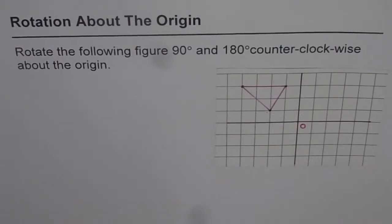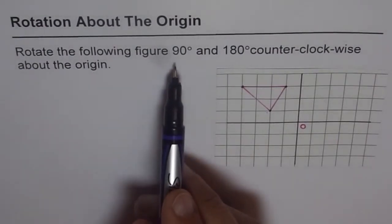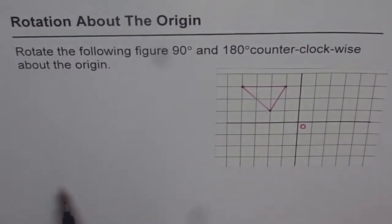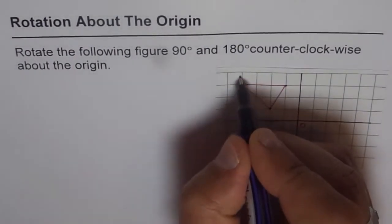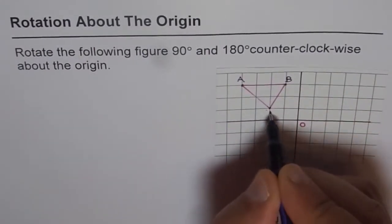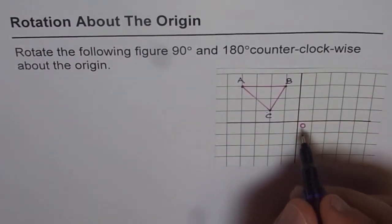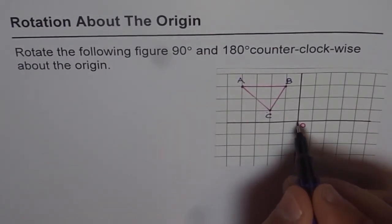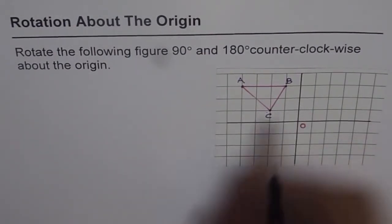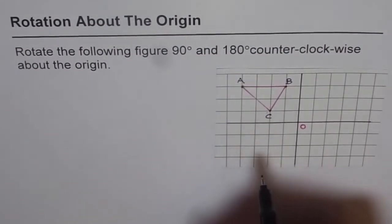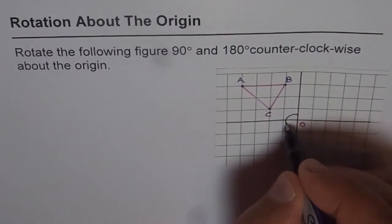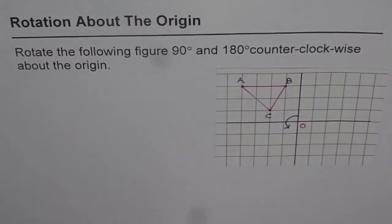Let us now understand rotation about the origin. Rotate the following figure 90 degrees and 180 degrees counterclockwise about the origin. We have a triangle here — let me label this triangle as A, B, and C. We have to rotate this triangle counterclockwise about the origin, considering two types of rotation: counterclockwise 90 degrees and counterclockwise 180 degrees. Counterclockwise means that direction — that is the direction in which we are going to consider the rotation.